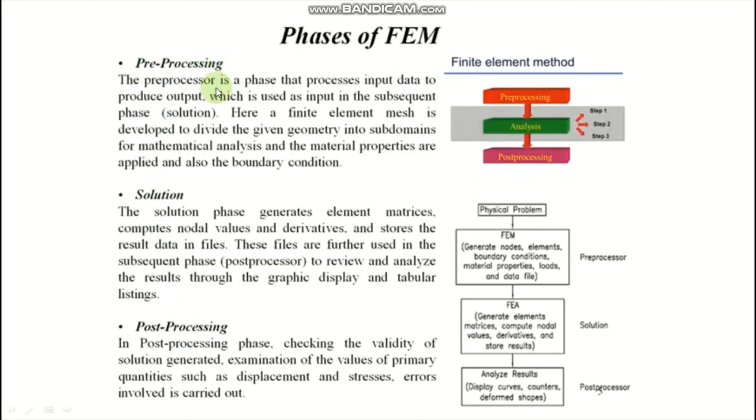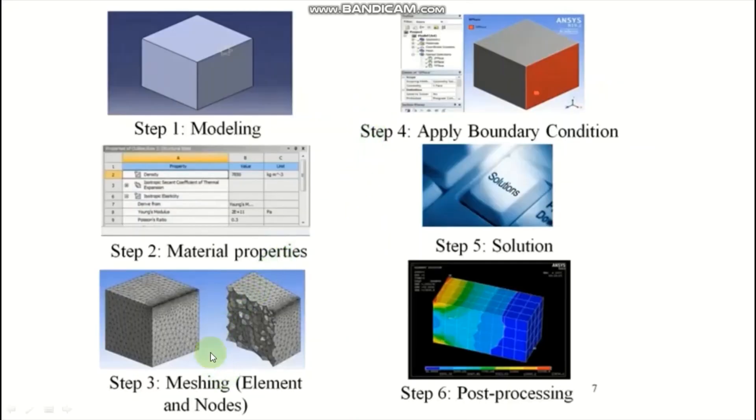First pre-processing, when we find out the solution of any entity, for that one we have to do some process. First of all, we have to prepare the model, second we have to discretize the body, means we have to divide the body into the number of finite parts and that you can see in this slide that is meshing.